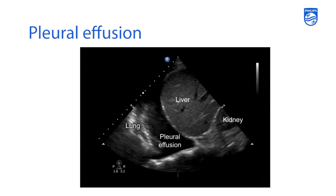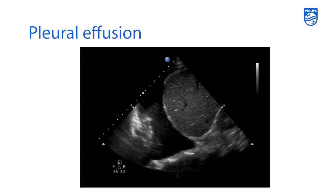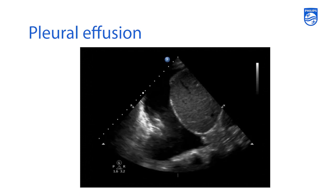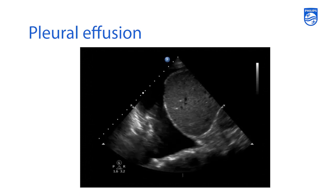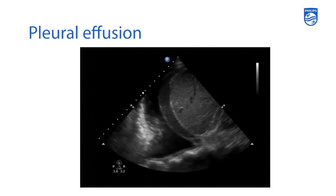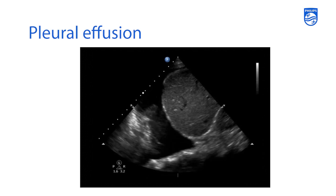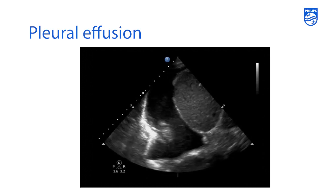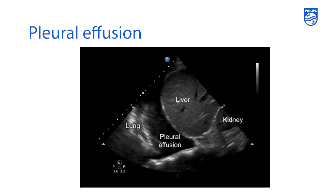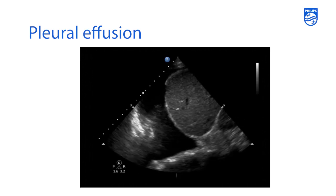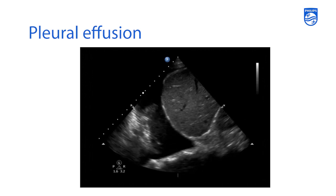Here's just another example of consolidated lung on the left-hand side of the screen within a black body of fluid which is a pleural effusion, and liver as delineated on the right-hand side of the screen with kidney below it.